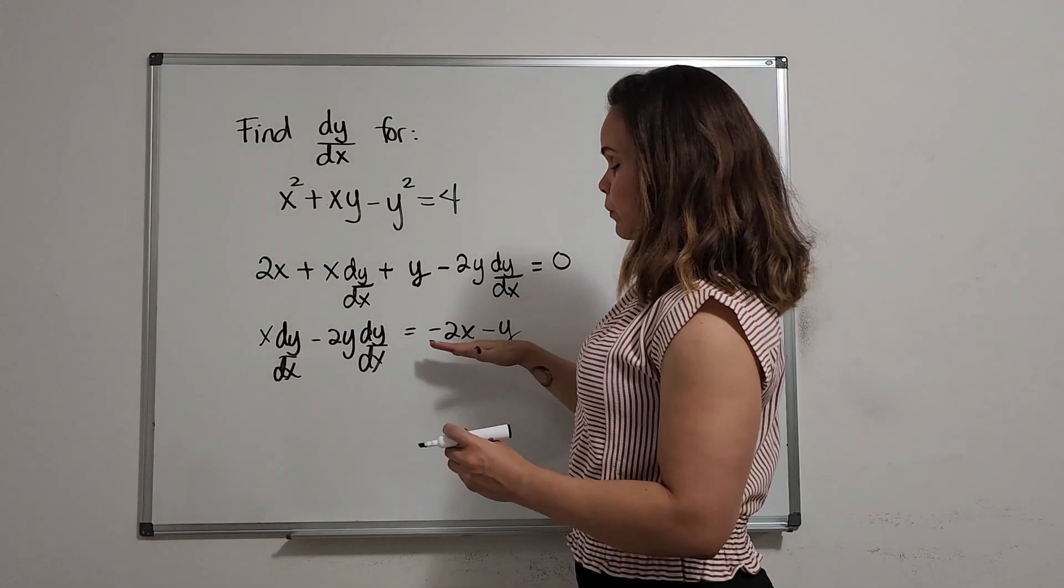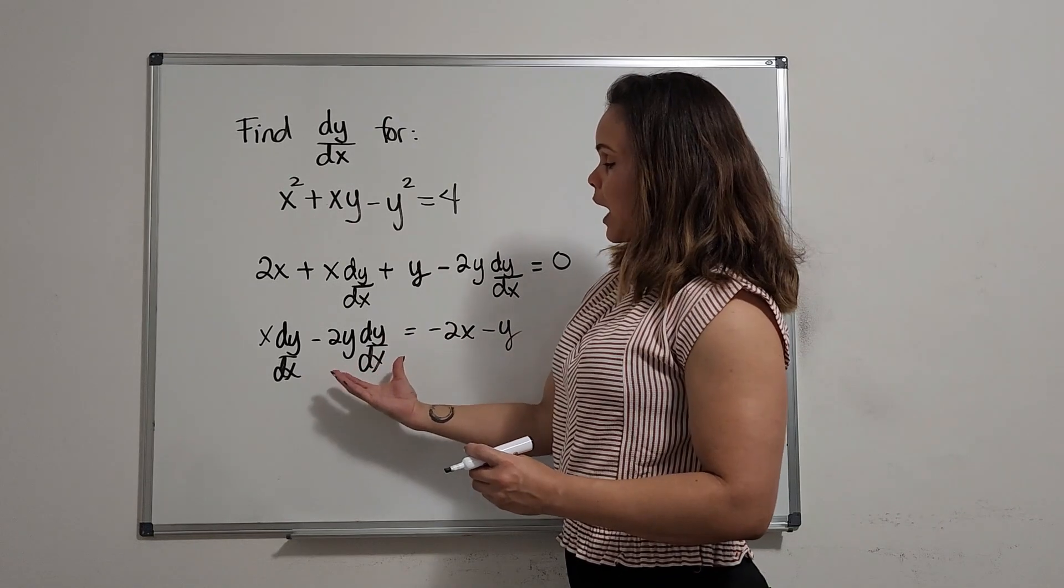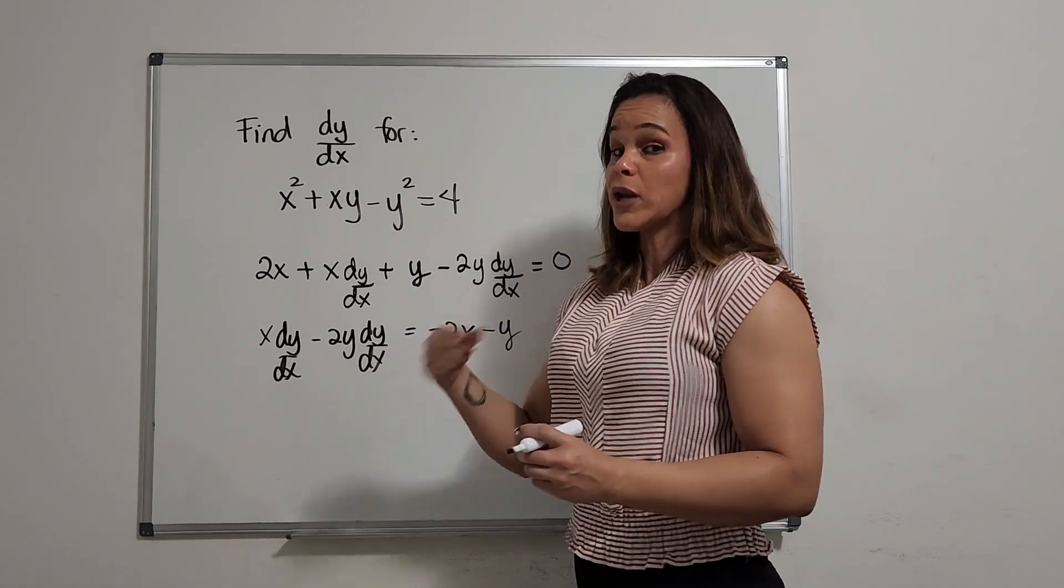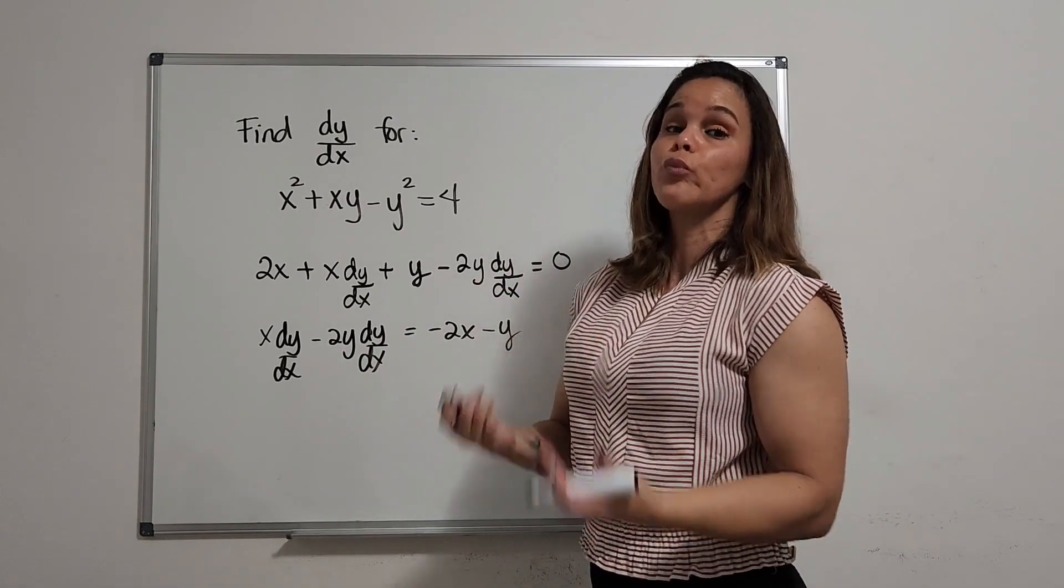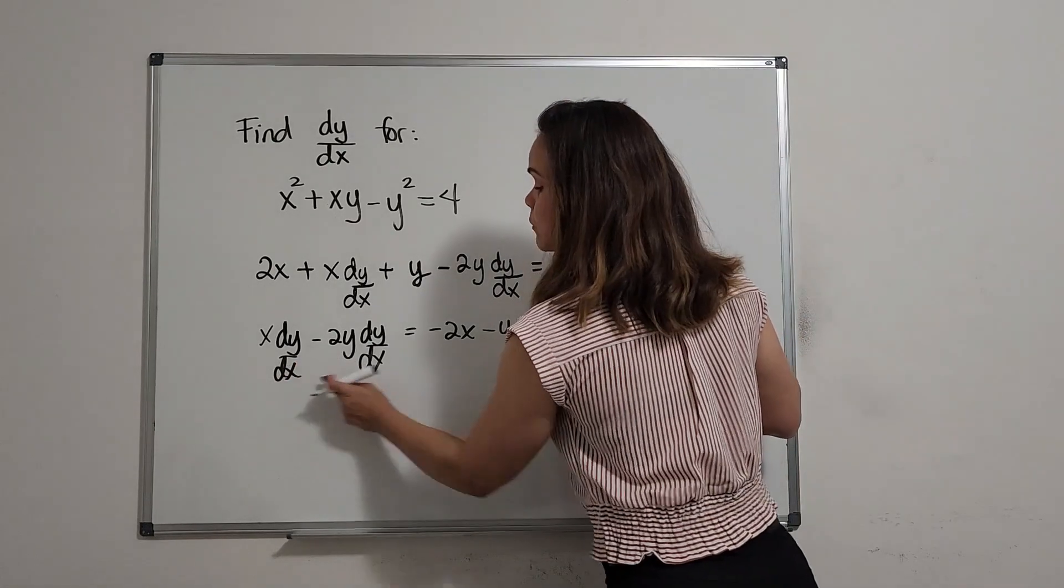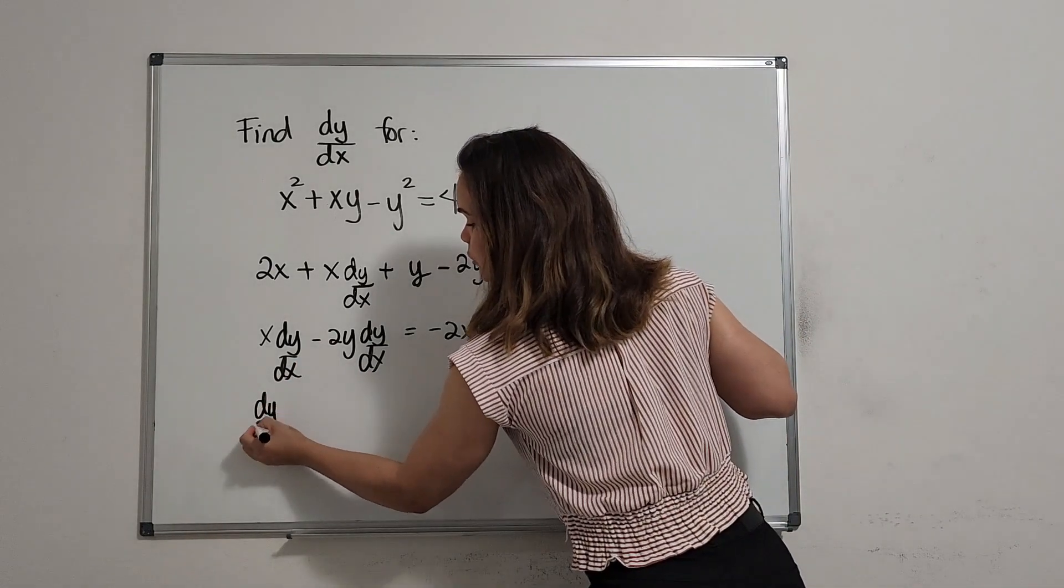Then I have too many dy dx. I would like only to have one. So what do we do? We factorize. I'm going to take as a common factor dy dx.